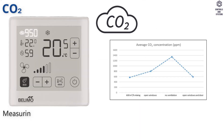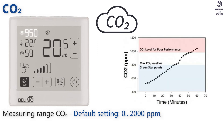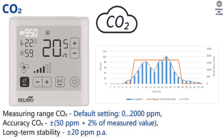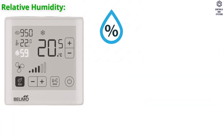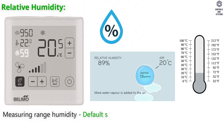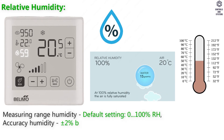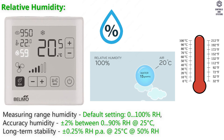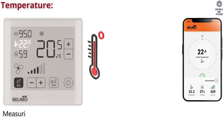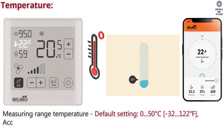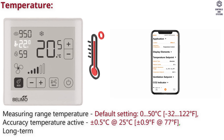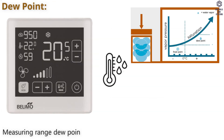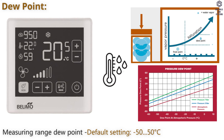Measuring data — CO2: measuring range is 0 to 2000 ppm; accuracy is ±50 ppm plus 2% of measured value. Relative humidity: measuring range is 0 to 100% RH; accuracy is ±2% between 0 to 90% RH at 25°C. Temperature: measuring range is 0 to 50°C; accuracy is ±0.5°C at 25°C. Dew point: measuring range is minus 50 to 50°C.